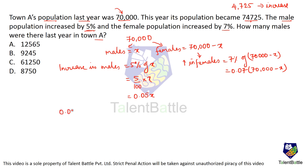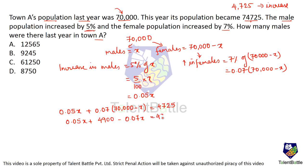Total increase: 0.05x + 0.07(70,000 − x) = 4,725. Expanding: 0.05x + 4,900 − 0.07x = 4,725. So 4,900 − 4,725 = 0.02x, giving 175 = 0.02x, and x = 8,750. The number of males last year in town A was 8,750, option D.